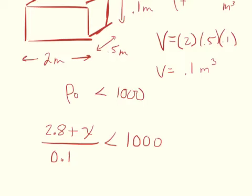If it were logs it would be circular — cylinders — so it would be pi r squared h. Anyway, the initial mass of the mattress plus some additional mass x, all over the volume. In reality, the additional mass you add also adds volume. The additional mass you're adding — doesn't that really also add volume?